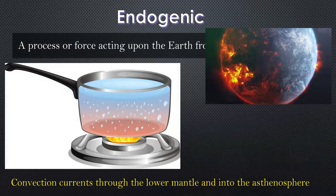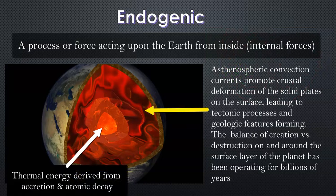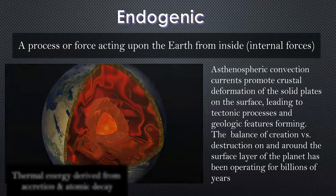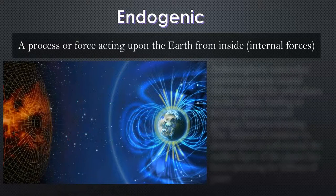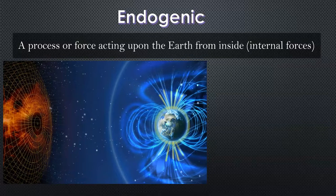Various heat processes and mantle plumes result in rising heat and material through different layers of the asthenosphere into the lithosphere. The crust is the outcome or product of this internal movement and release of heat over time. The outer core is changing with the earth's magnetic field — iron and nickel moving around like a massive machine — creating the electromagnetic field.